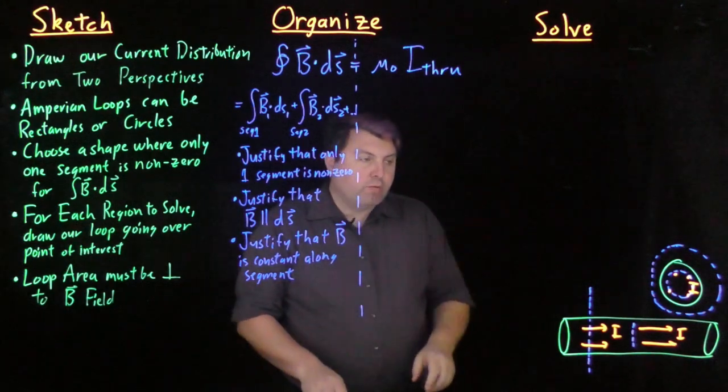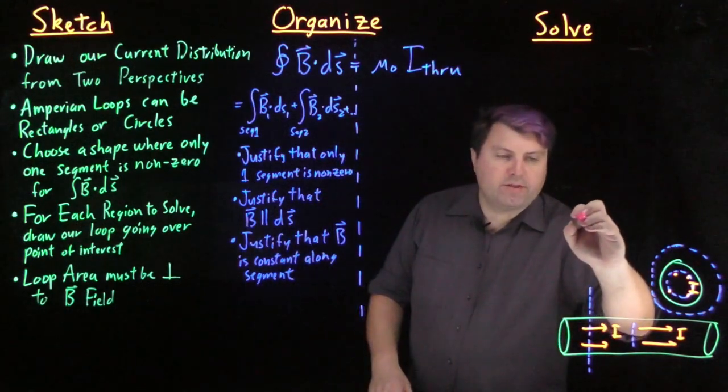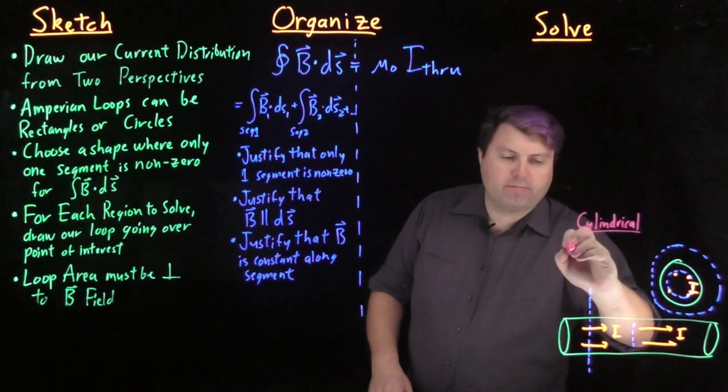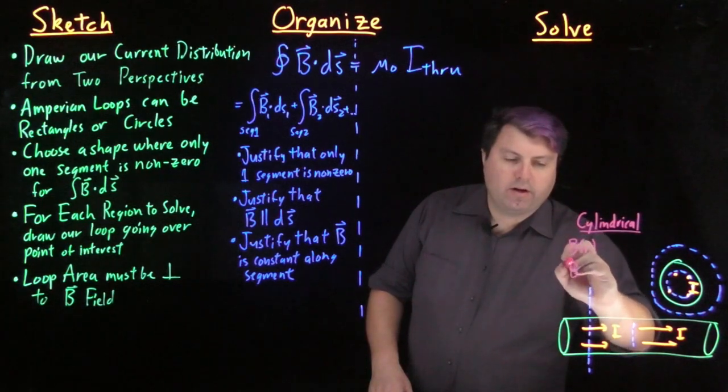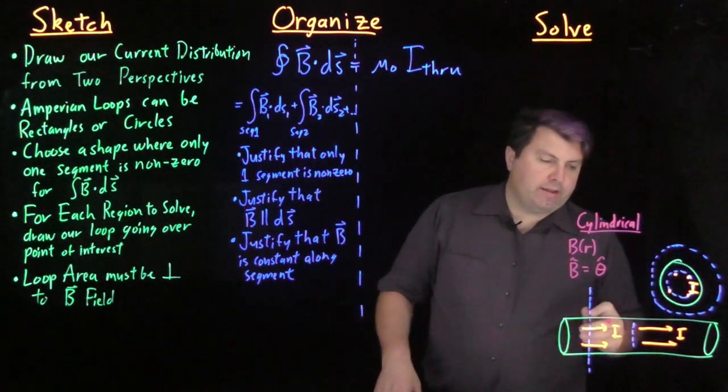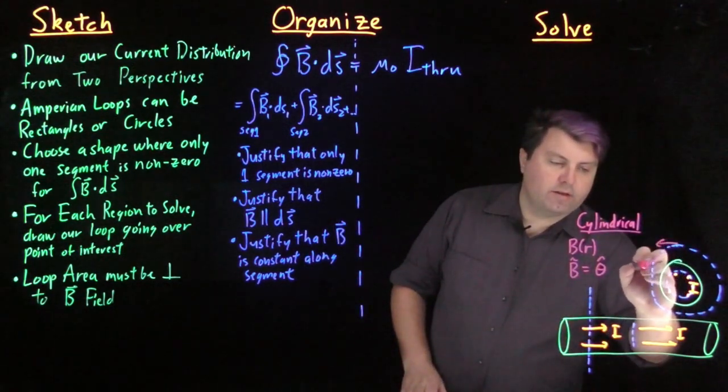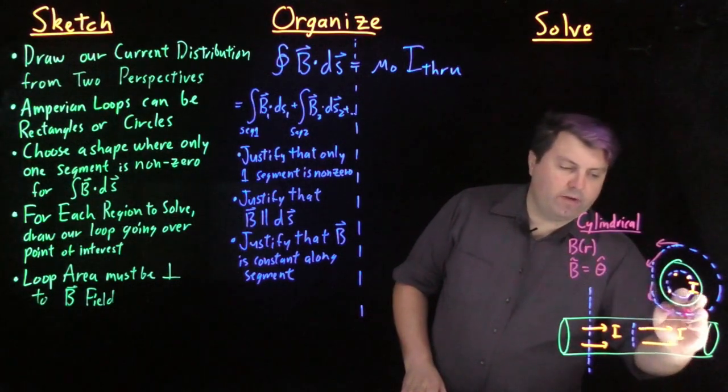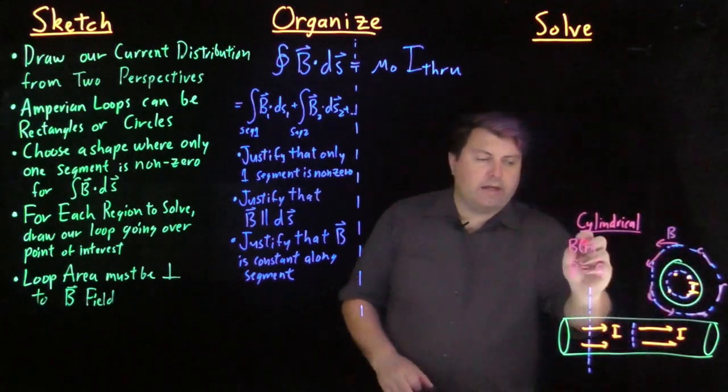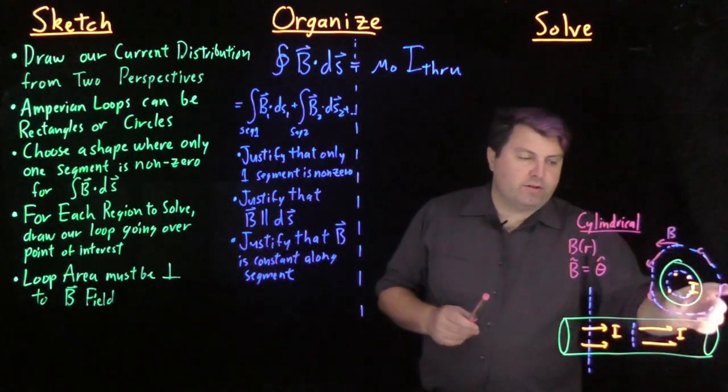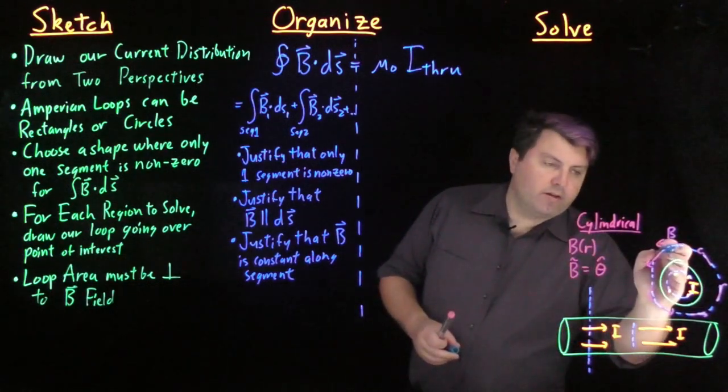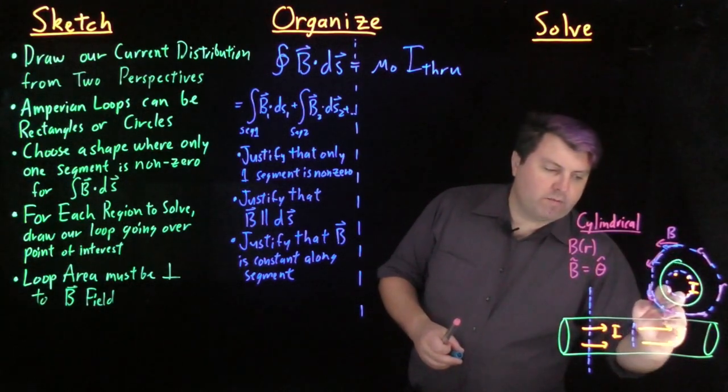So what we learned from magnetic symmetry is we know that we have cylindrical symmetry here, which means that our magnetic field is a function of r, and the direction of our magnetic field is in the theta direction. So our magnetic field looks like this, and our circle is a constant radius. Our ds and B are in the same direction.